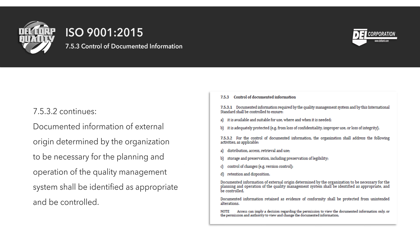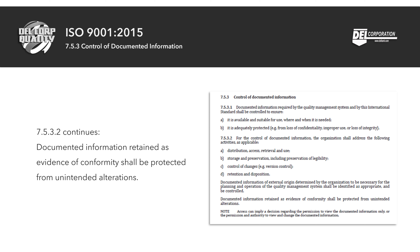And d) retention and disposition. Section 7.5.3.2 continues: documented information of external origin determined by the organization to be necessary for the planning and operation of the quality management system shall be identified as appropriate and be controlled. Documented information retained as evidence of conformity shall be protected from unintended alterations.